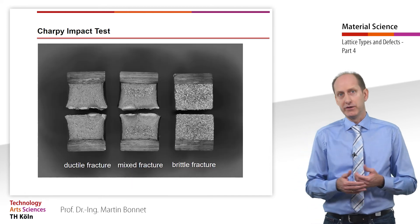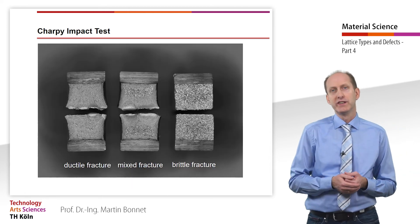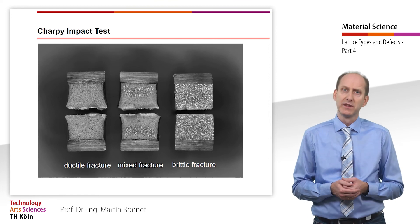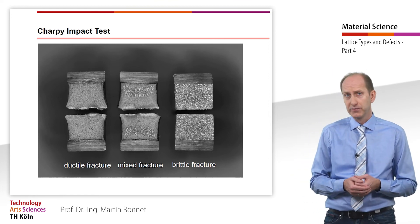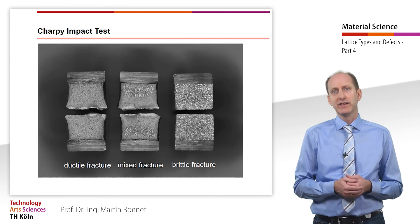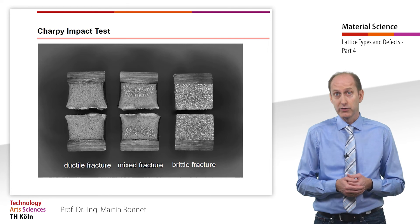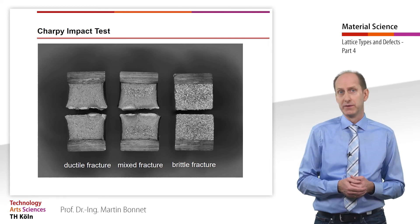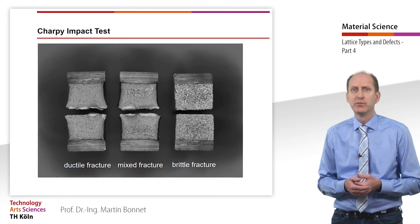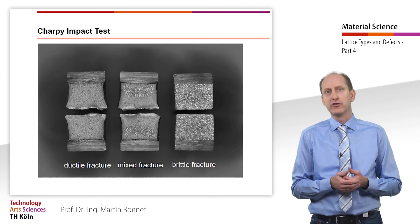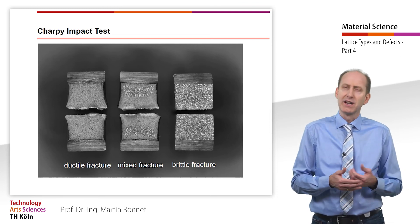Some metal materials, for example structural steel with BCC lattices, tend to become brittle at low temperatures. If such materials are tested with the Charpy impact test at low temperatures, the result is a brittle fracture. The specimen has a smooth fracture and the fractured surface has a microcrystalline appearance.